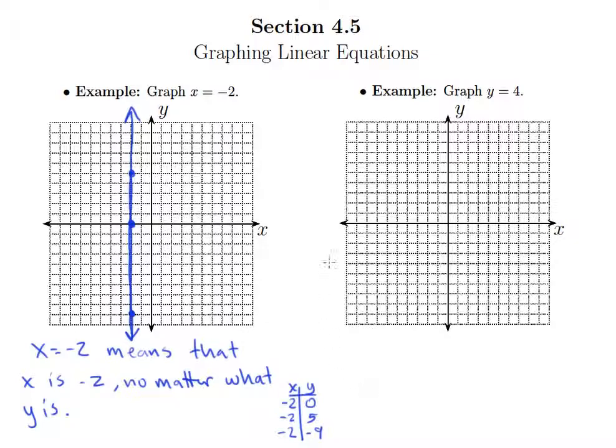At this point, you might be able to guess what y = 4 looks like. y = 4 means that because x doesn't show up, y is 4 no matter what x is.